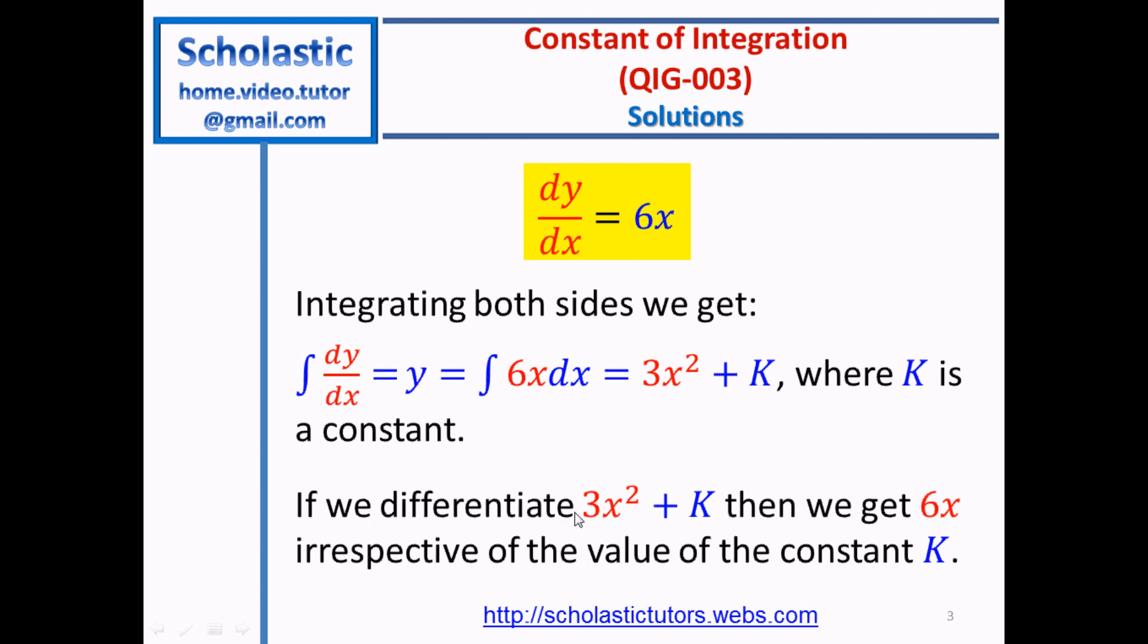Actually, if we differentiate 3x squared plus K, then we get 6x because differentiation of 3x squared means 2 times 3, 6x to the power 2 minus 1, 6x to the power 1.